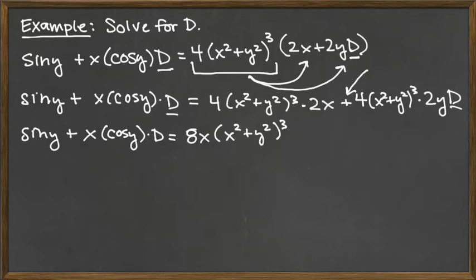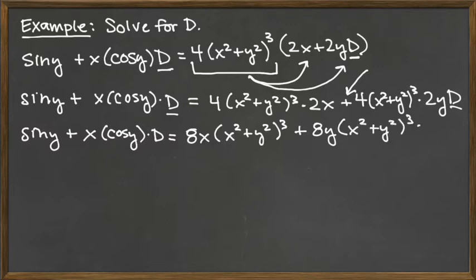That same sort of thing is what I'm going to do for the term that follows the plus sign. We've got 4 times the factor raised to the third power times 2y times d. So I'll do the multiplication of 4 times 2y to give me 8y, times x squared plus y squared raised to the third power, times d. Now we've got our two d's — one on each side.